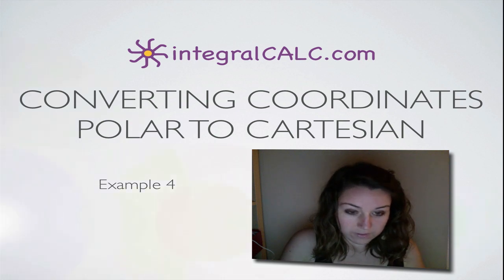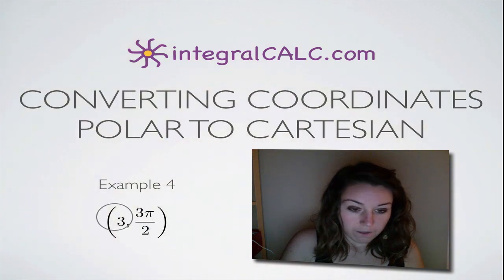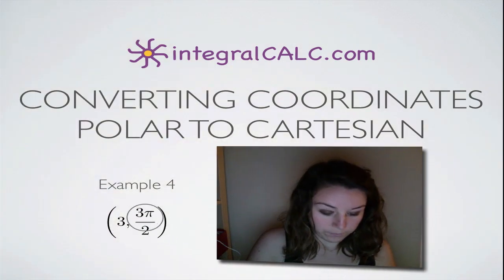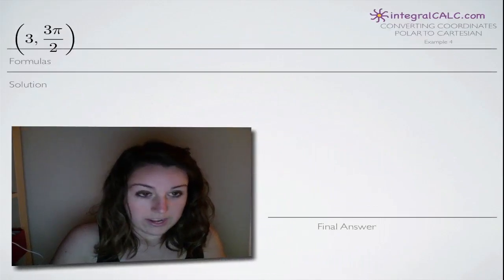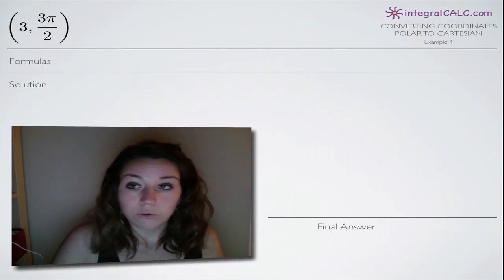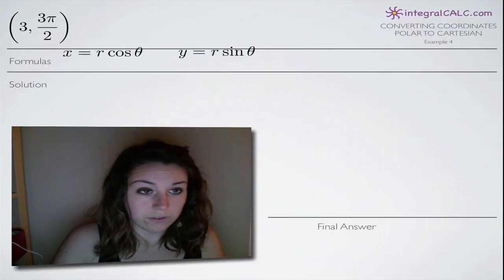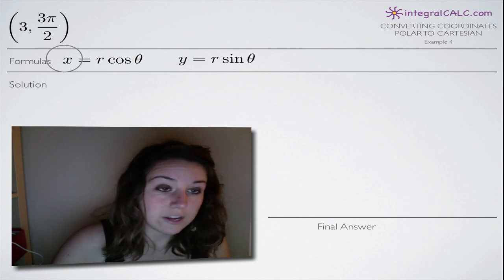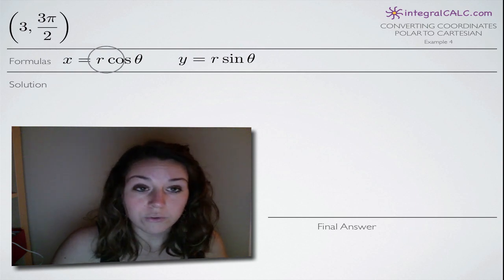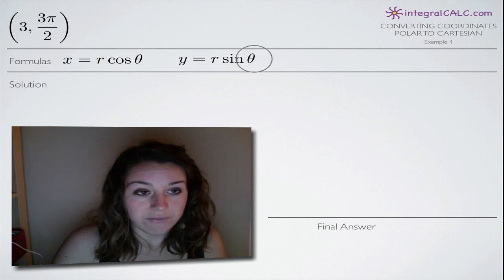The polar coordinates that we're going to be given in this problem are (3, 3π/2). And as with any problem where we're converting polar coordinates to Cartesian coordinates, we're going to be using these two formulas here: x equals r cosine of theta and y equals r sine of theta.